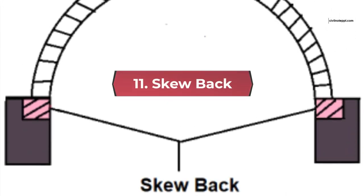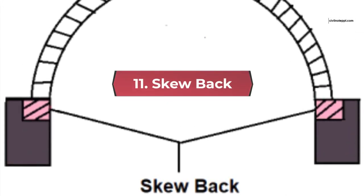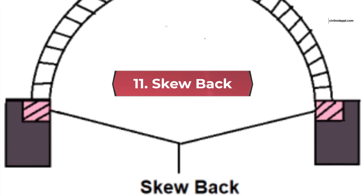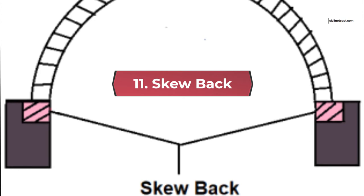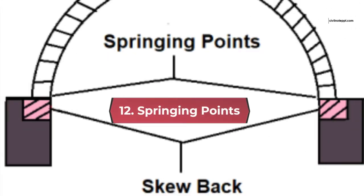11. Skewback. It is the splayed surface prepared on the top of an abutment or pier to receive the arch. Arch work actually starts from the skewback. 12. Springing points. These are the points from where the curve of an arch starts. In other words, these are the points at which the intrados and skewbacks intersect.